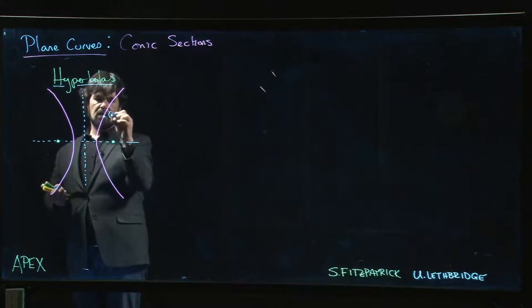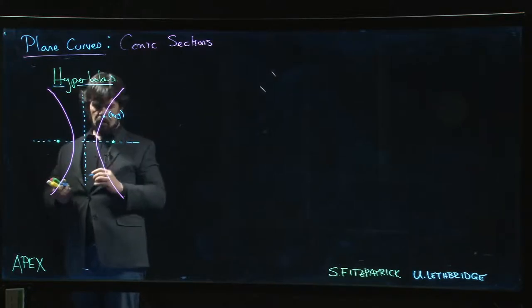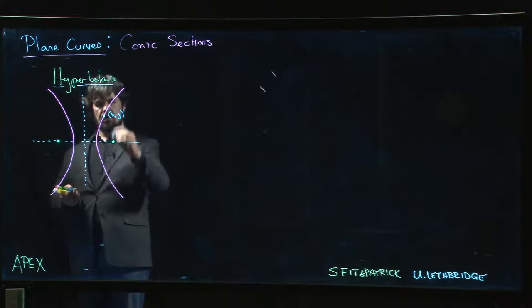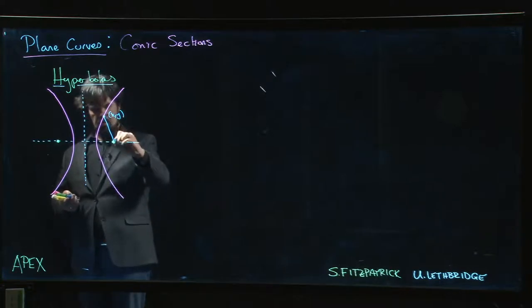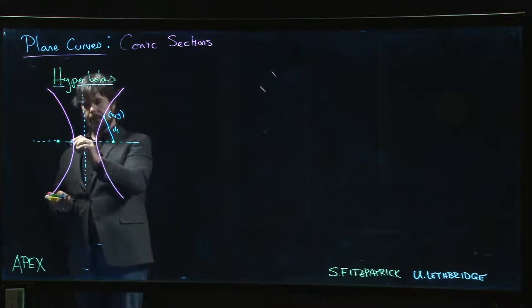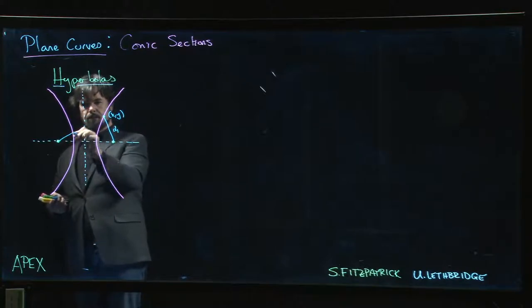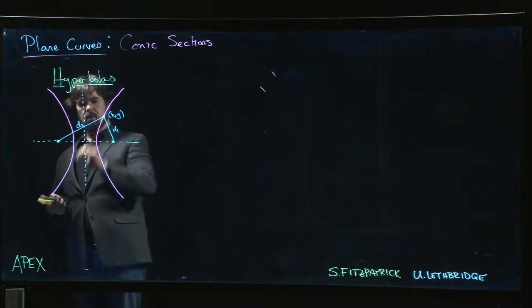So if I have a point (x,y), I've got these two distances from here to here, maybe that's d1, and from here to here, call that d2.